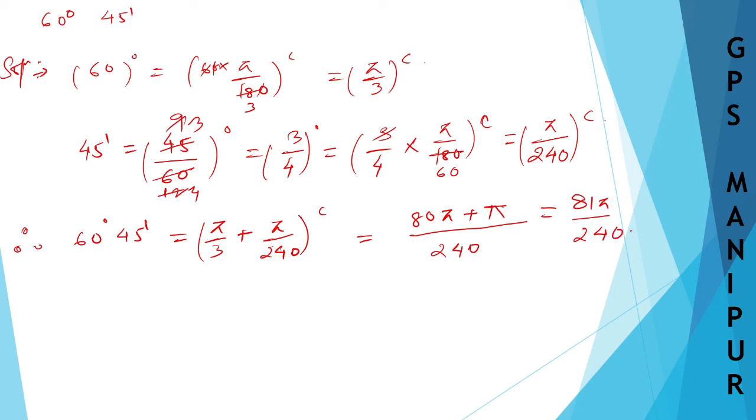Now I need to cancel. Let me cancel by 3: 3 and 6, 3 and 21, 3 and 24. So it is 27π by 80. This is in radians.